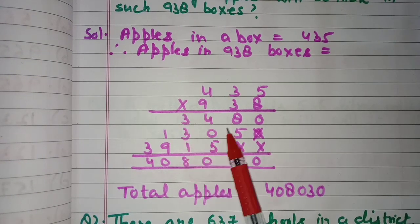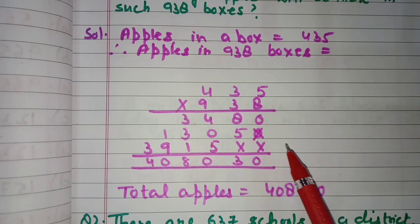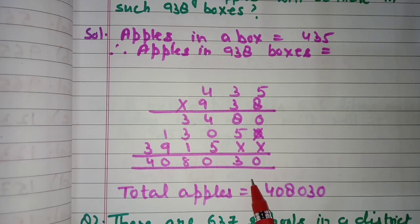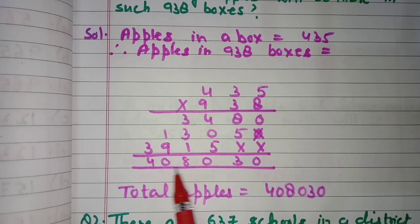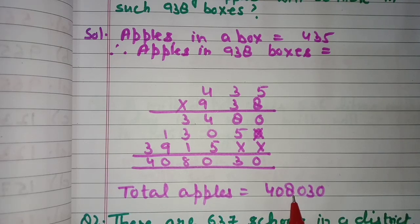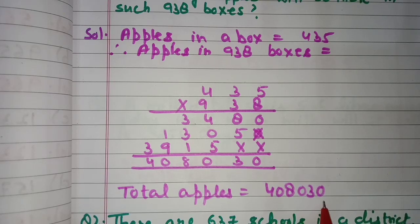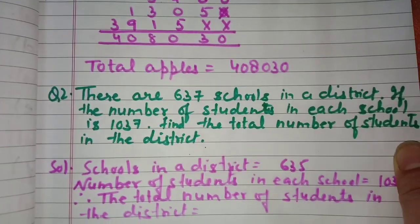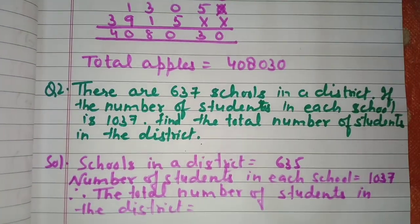Apples in one box: 435. Therefore, apples in 938 boxes — we multiply 435 by 938 and get 4,80,030. So the total number of apples in 938 boxes is 4,80,030.